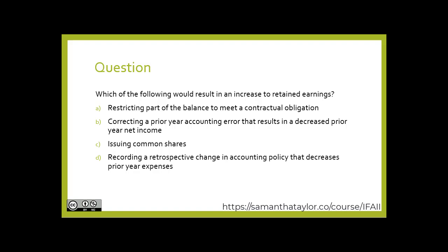I'm going to give you a hint before I give you a moment to think about it. For each one of these, I would suggest writing out the journal entry. If you understand how each would conceptually affect the income statement, then you can simply pick out the one which would be an increase to retained earnings. And hint hint — because this is an equity account, an increase to retained earnings would be a credit to retained earnings.